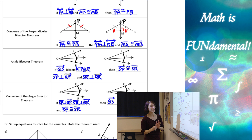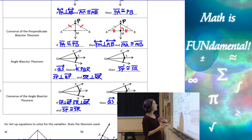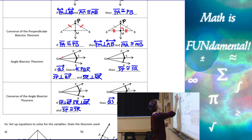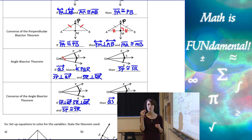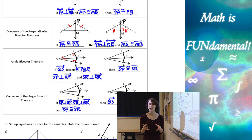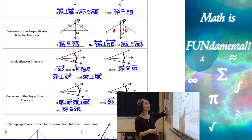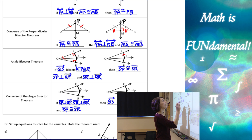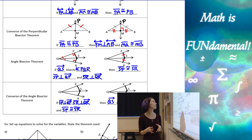Next we have the angle bisector theorem — this one's a little bit more complicated. If ray QS bisects angle PQR, cutting that angle in half so the two pieces are congruent to each other, and SP is perpendicular to ray QP, and SR is perpendicular to ray QR — that's a lot of given information. But if we have all of those pieces marked on our diagram, then we can use the angle bisector theorem to state that SP is congruent to SR.